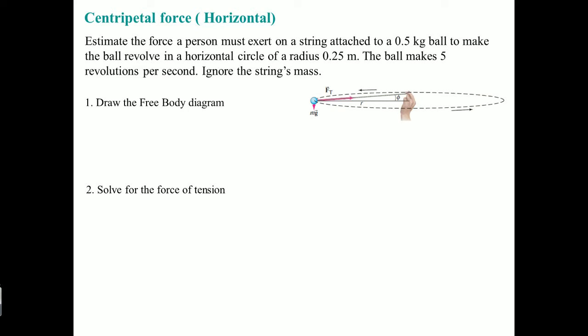The first thing we have to do is draw a free body diagram. If we look at it from the side, we treat the object as a circle. There is a force going toward the center of the circle — that is the tension force. Then there is a force going down, which is force gravity, mg.